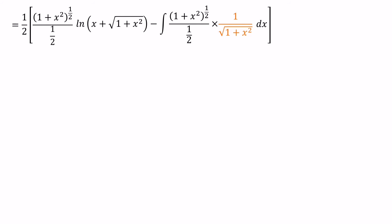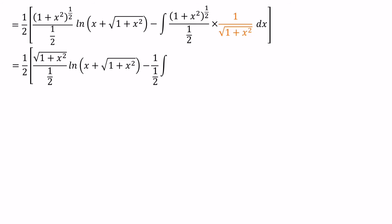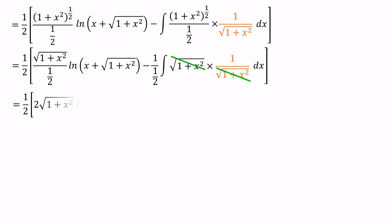The denominator value half is a constant, so we bring it outside of the integral, giving us 1 over half integral. Instead of (1 plus x squared) to the power of half, we write square root (1 plus x squared). We can now cancel the square root (1 plus x squared) in the numerator with the square root (1 plus x squared) in the denominator. The denominator of the denominator comes to the numerator, so 1 over half becomes 2. Now we have, inside the bracket: 2 times square root (1 plus x squared) times ln(x plus square root (1 plus x squared)), minus 2 times integral of 1. The integral of 1 equals x.